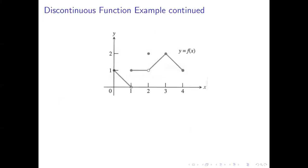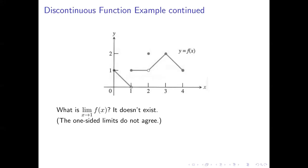Here's a slightly larger image of the graph of that piecewise defined function. Let's ask: what's the limit as x approaches one of f of x? Well, this limit doesn't exist. You can tell because the one-sided limits as x approaches one do not agree with each other. As you approach one from the left, you're getting closer and closer to y equals zero. As you approach one from the right, you're getting closer and closer to y equals one. So the one-sided limits don't agree, and the ordinary limit as x approaches one does not exist.